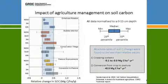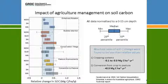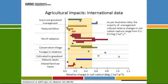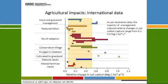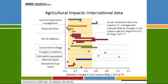The conversion from crop to pastures always gave a positive sequestration. To put this in an international context, a Canadian review across all available data from around the world shows numbers of 0.1 to 0.5 tons of carbon per hectare per year — very consistent with what we found within the Australian data.